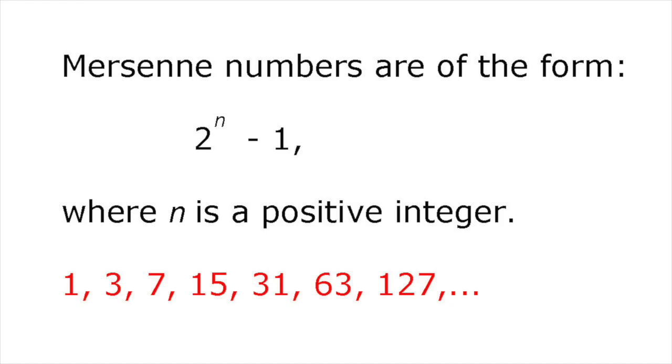All Mersenne numbers can be expressed in the form 2 to the n minus 1, where n is a positive integer. In other words, they are 1 less than the corresponding power of 2. The first few are 1, 3, 7, 15, 31, 63, and 127.